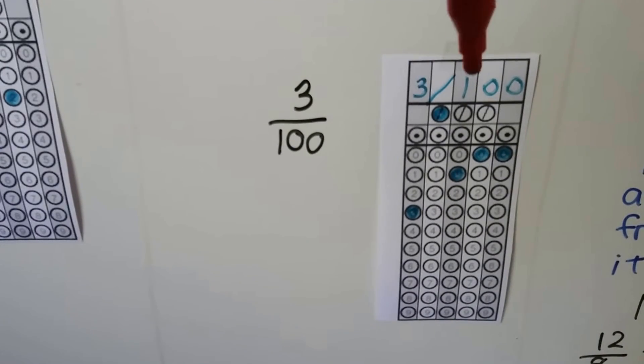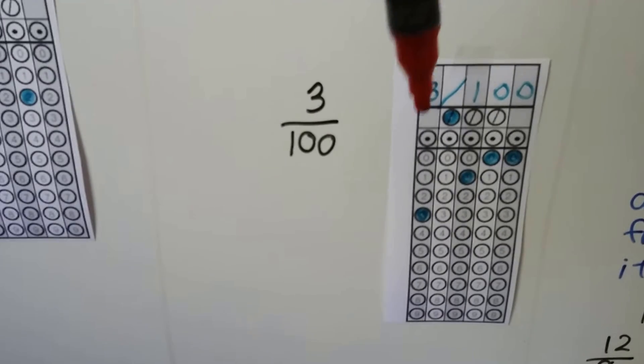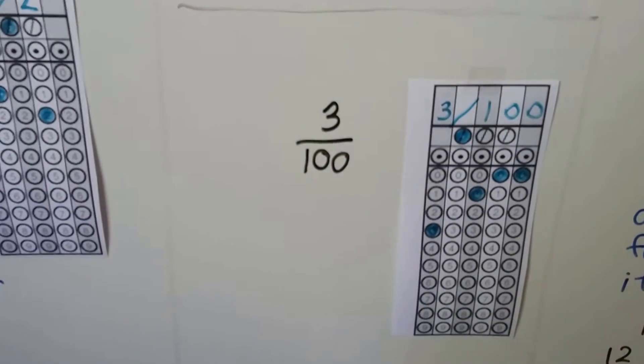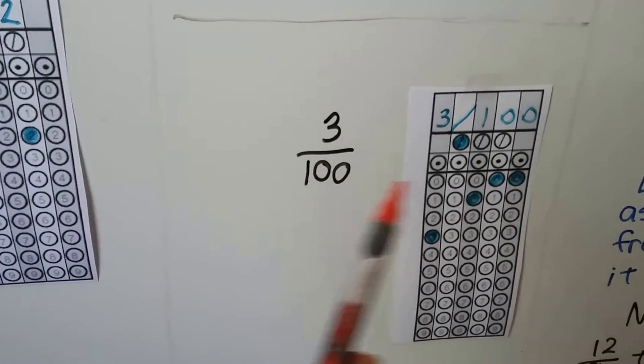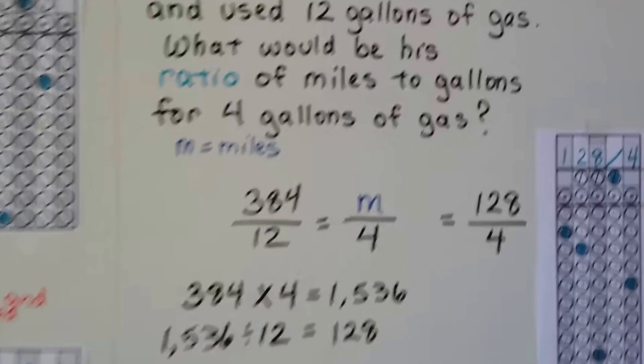We've got to make sure we fill these in correctly. We write the three, the slash, the one, the zero, the zero, and that's the circles we fill in. The three, the slash, the one, the zero, the zero. So zeros or placeholders are really important and if they're in the answer, you need to put them in the grid.